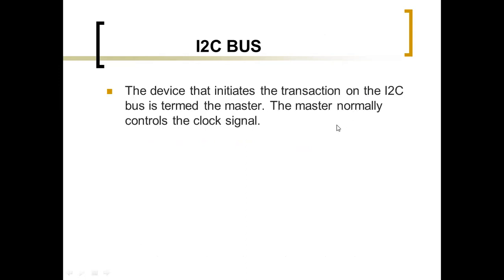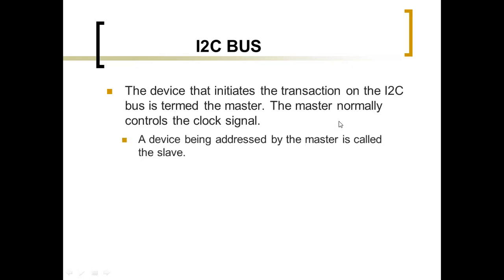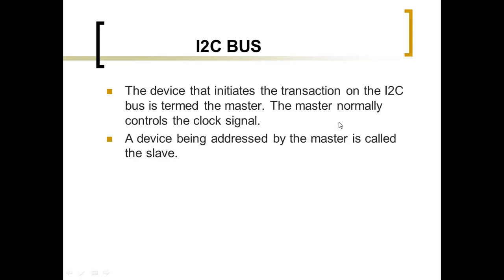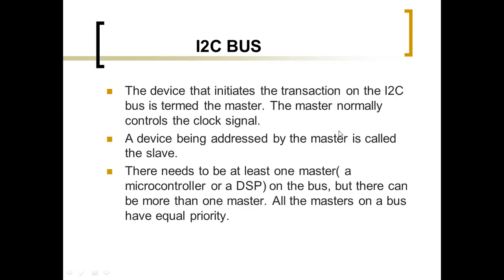The device that initiates a transaction on the I²C bus is termed the master. The master normally controls the clock signal. A device being addressed by the master is called the slave. There needs to be at least one master on the bus, but there can be more than one master. All masters on the bus have equal priority.